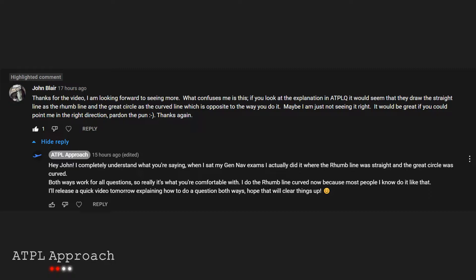I completely understand where he's coming from and the confusion as this bugged me for a while as well. When I sat my GenNav exams, I did it the same way that John has mentioned, which is the opposite to what I do now. This is where the great circle is curved and the rhumb line is straight. I thought it made more sense to do it this way because the word circle in great circle makes you think of a curved line. So why am I now doing it straight?